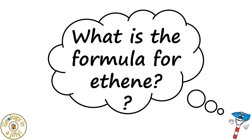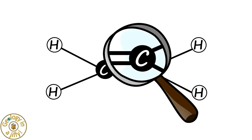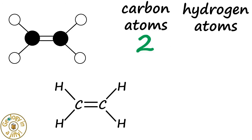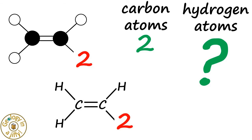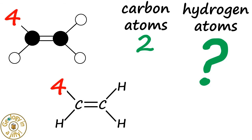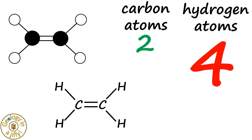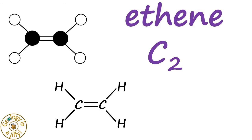What is the formula for ethene? If we count the number of atoms in ethene, we see that it has two carbon atoms, and we can work out how many hydrogen atoms there are by simply counting them: one, two, three, four — four hydrogen atoms, giving us the formula C2H4.